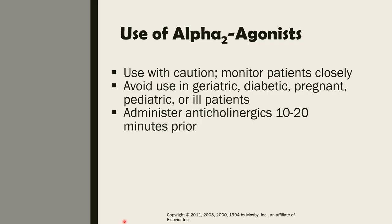Use alpha-2 agonists always with caution. The patient should be watched closely to make sure their breathing is adequate, because it causes respiratory depression. It should also be avoided in geriatric or old patients, diabetic patients (because it can cause hyperglycemia), pregnant animals (because it can cause premature labor induction), pediatric, and ill patients. You can also administer an anticholinergic drug 10 to 20 minutes prior to its administration in order to prevent bradycardia.